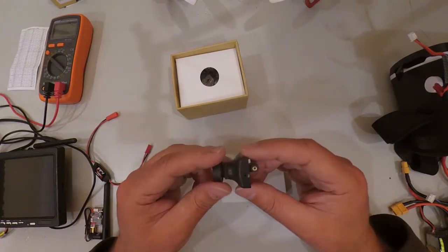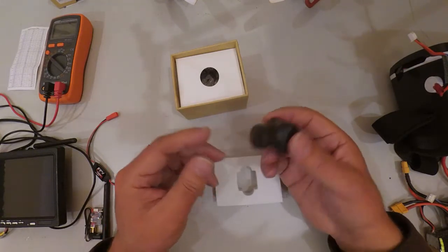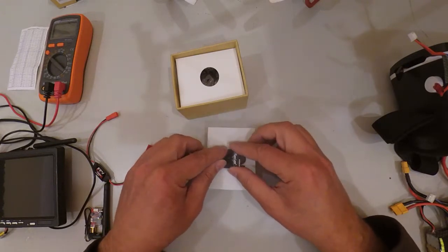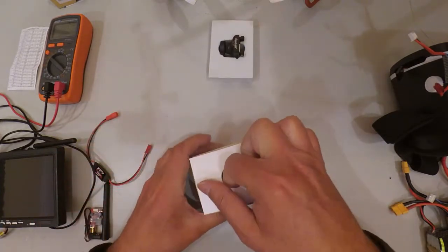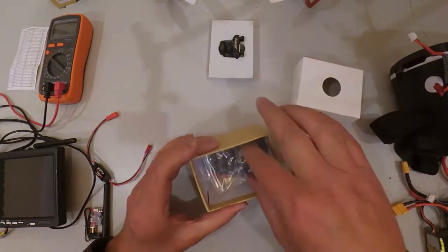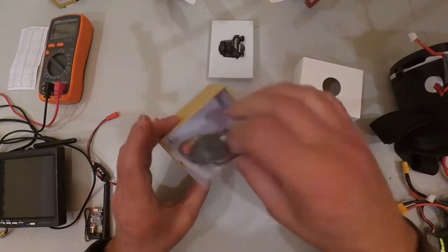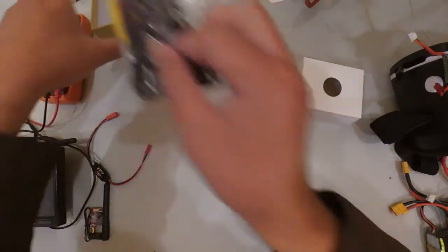When it comes to FPV racing, which I will not be doing, you need something which is light. That's going to be my camera. This camera comes with some cables, mountings, and cables we'll get to later.